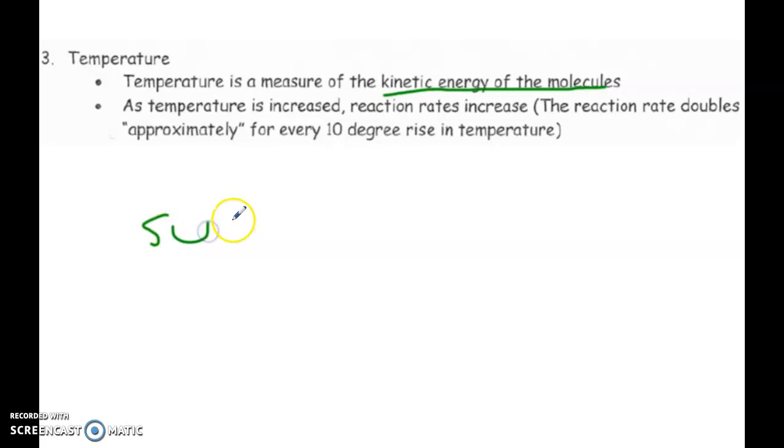So when we say a collision is successful, that means two things have happened. There is a sufficient amount of energy when they collide. So the energy has to be - there's a specific amount of energy that has to be met. And if it's not met, it's not going to be successful. So you can have collisions happening, but you may not have a reaction. So it needs to have a sufficient amount of energy. And of course you need them to collide.